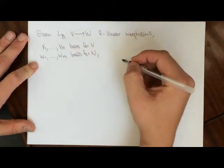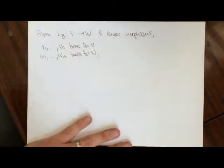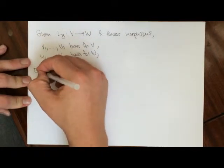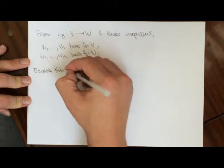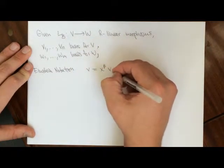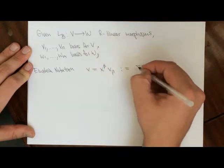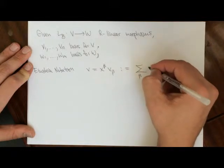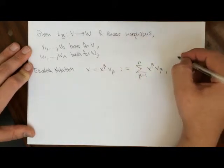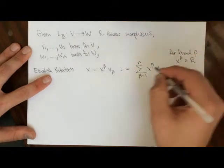We can always find a matrix that transforms the coordinates. I'm going to introduce some notation now that's really convenient: Einstein notation. Instead of using lower subscripts I'm going to use upper subscripts. We can write a vector as x^beta * v_beta, where repeated upper and lower indices imply summation — summing beta from 1 to n. For a fixed beta, x^beta is an element of R and v_beta is a basis element.